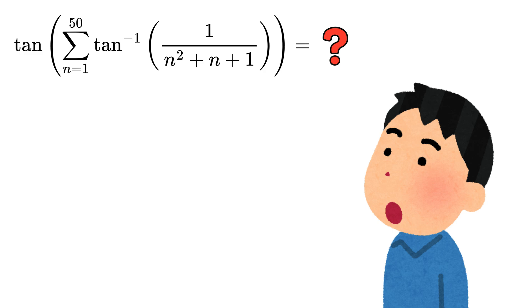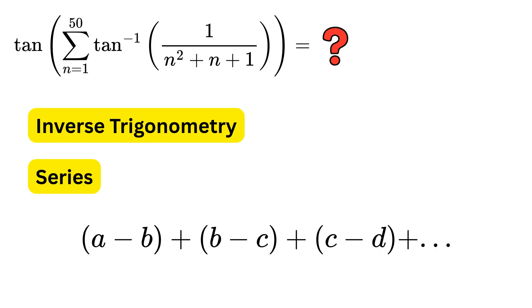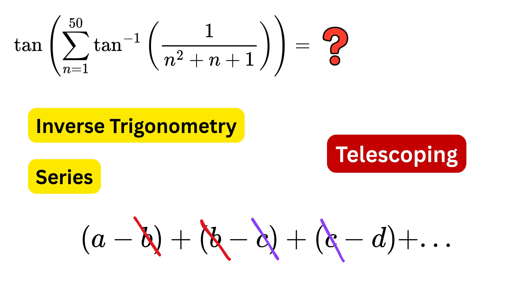This is such an amazing problem as it involves inverse trigonometry and a long and scary looking sum, but later you will find out that the problem is actually based on a simple cancellation trick, also known as telescoping.